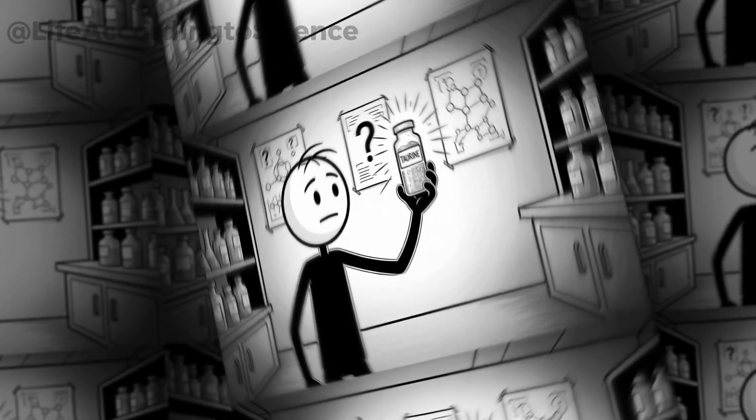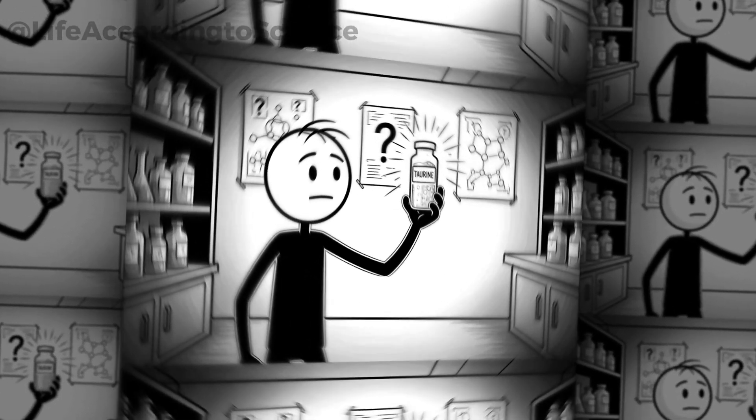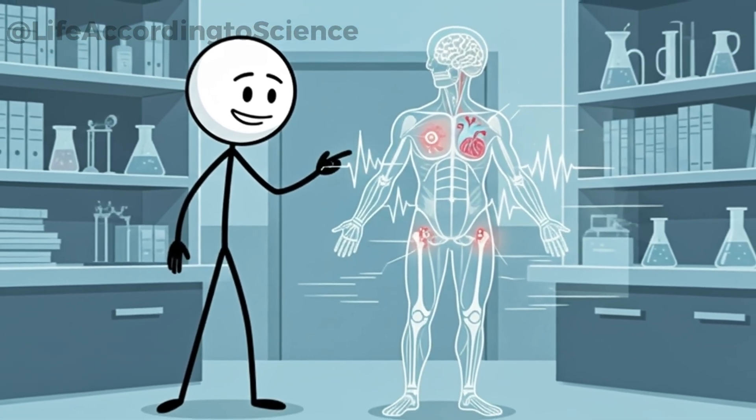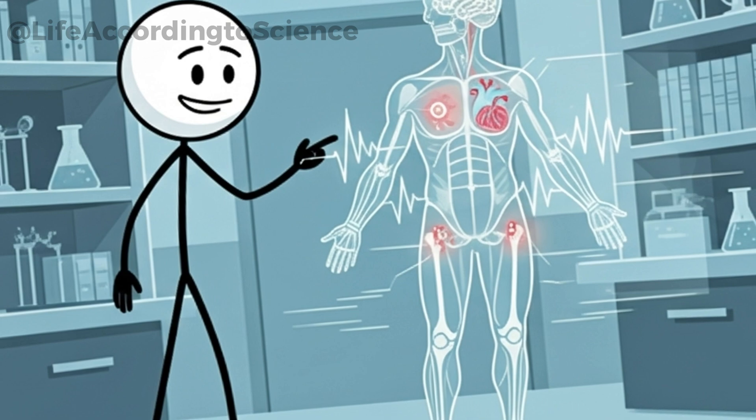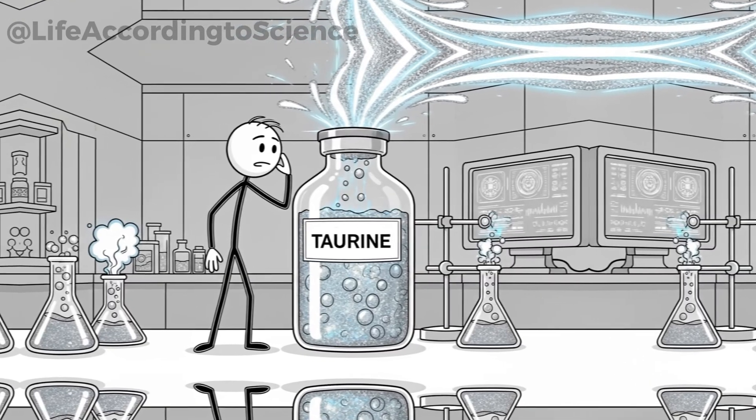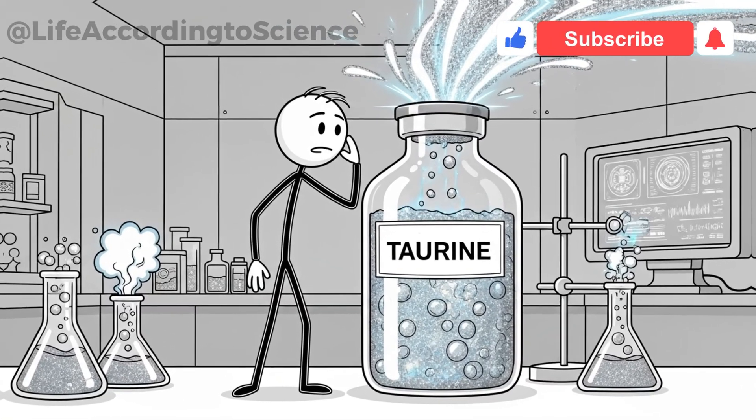Taurine often appears on energy drink labels with a sense of mystery, as if it's some exotic, powerful substance. In reality, taurine is an amino acid naturally found in your body, playing a role in muscle function, brain development, and cardiovascular health. But when added in large amounts to energy drinks, its exact impact isn't fully understood.